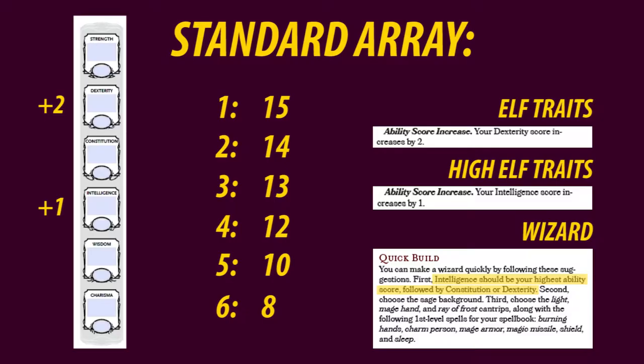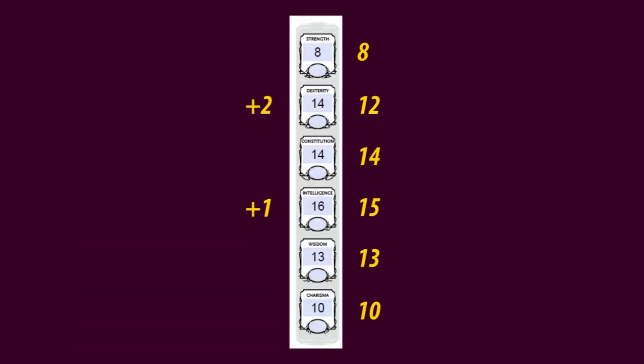I'm going to use the standard array method for Emanon, but before I place out the scores, let's take a look at the racial and sub-racial bonuses. That way you can better see what areas you need to improve as well as which ones you can sacrifice. As a high elf, I will get a bonus of +2 on dexterity and +1 on intelligence. As a wizard, intelligence should be prioritized, while constitution and dexterity should be relatively high too. This means my final distribution should look something like this. Looks like Emanon will be weak as hell.